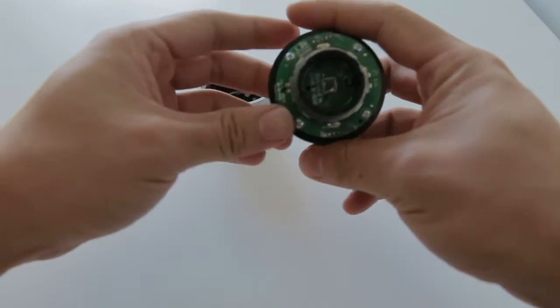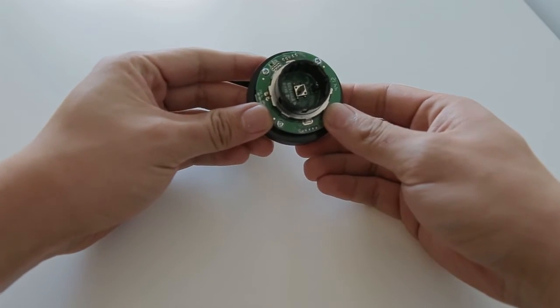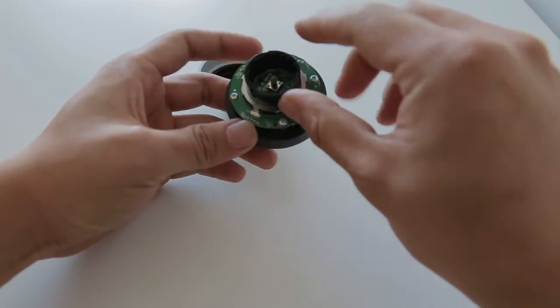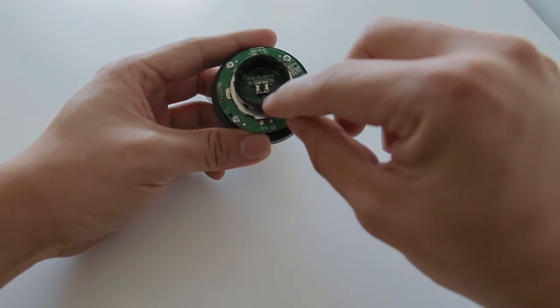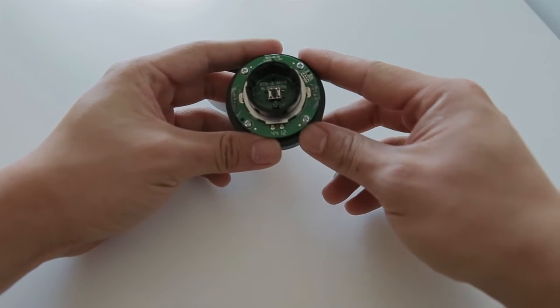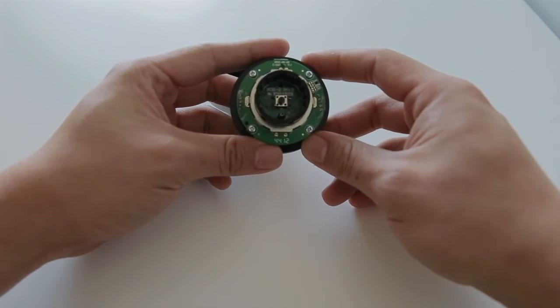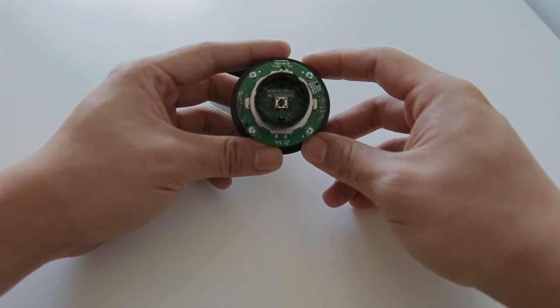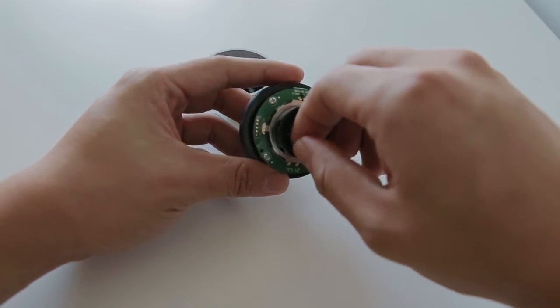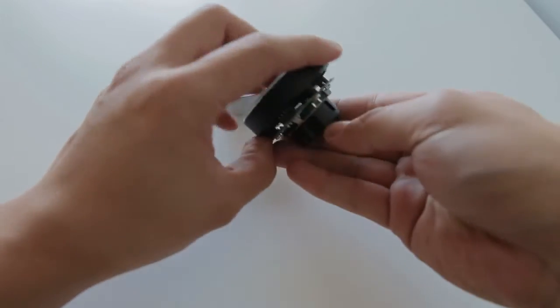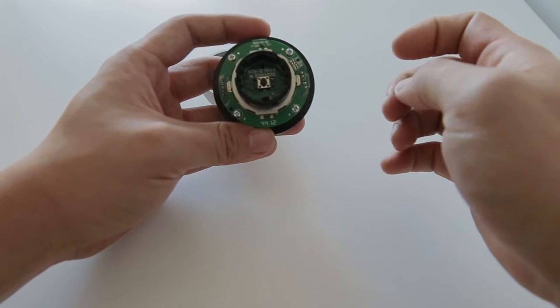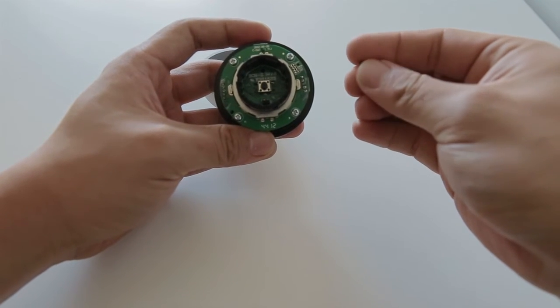By looking into that bottom part, you will be able to see something like a jumper there - two metal pins and a little jumper that's attached to them. Just pull out that jumper using your finger. It's a fairly easy process so that those two metal pins are disconnected from each other.